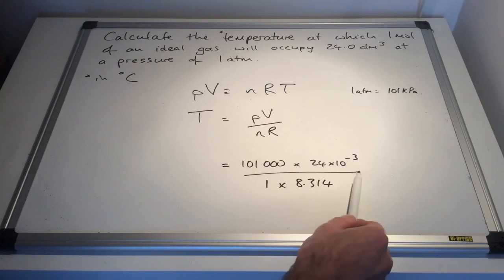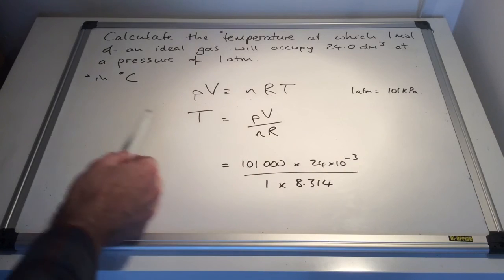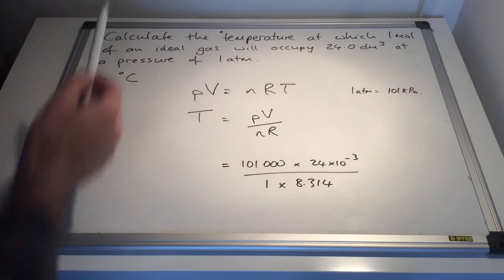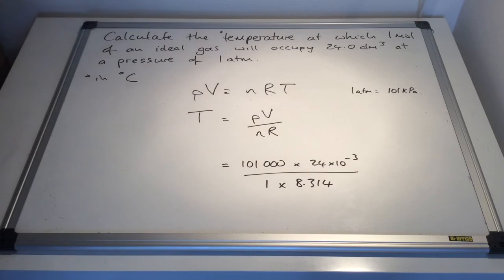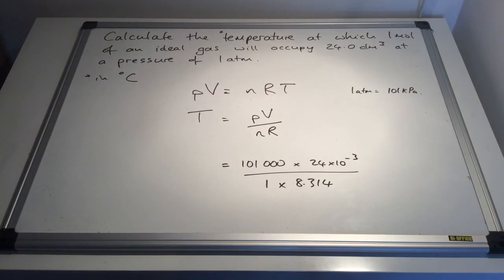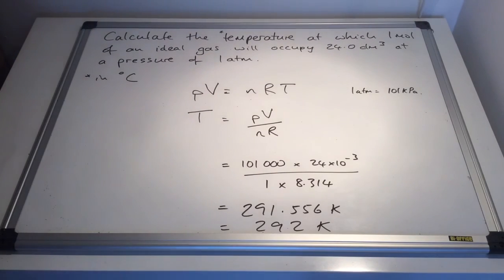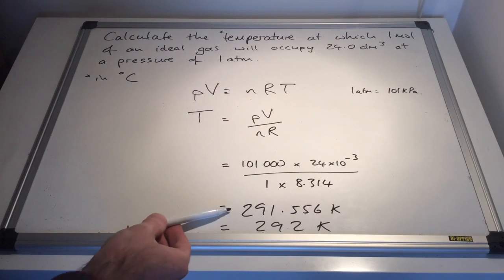Divided by the number of moles, one mole, so one there, and the ideal gas constant is 8.314. So remember, our temperature is going to come out in Kelvin. So there's the calculator value, 291.556, so I've rounded that to 292 degrees Kelvin.